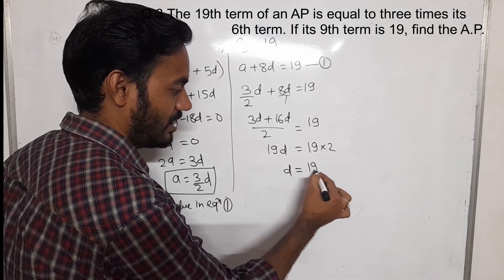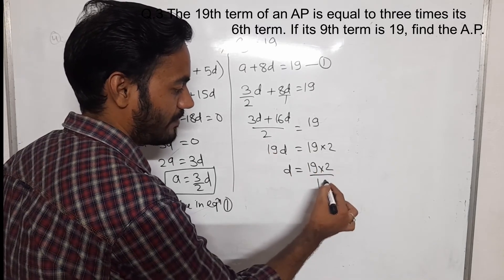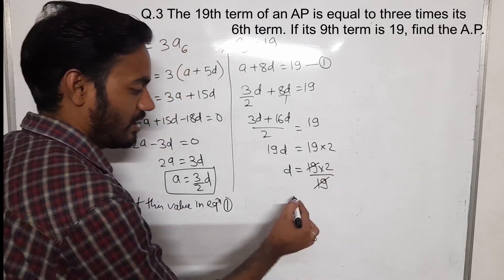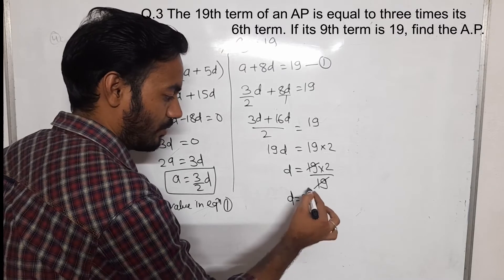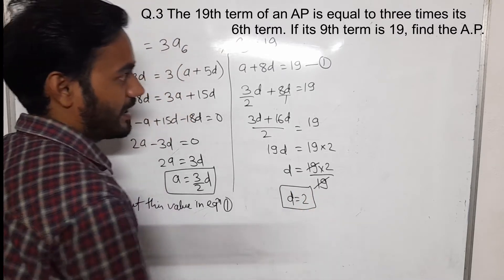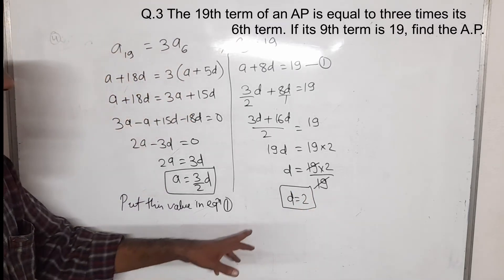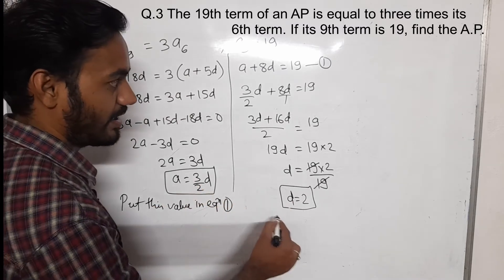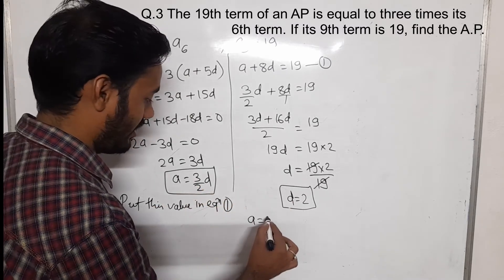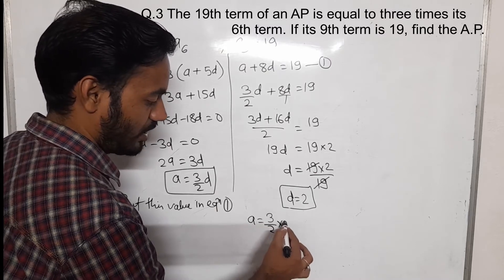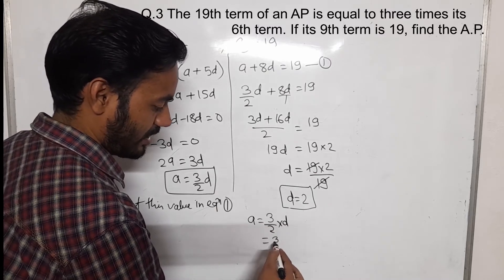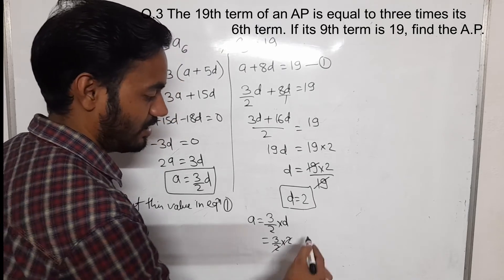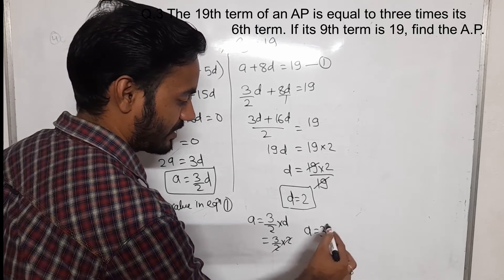That is D equals 19 into 2 by 19. 19 and 19 get cancelled by each other, and D will become 2. Again, putting this value of D into A equals 3 by 2 times D: A equals 3 by 2 into 2. 2 and 2 get cancelled, and A will be 3.